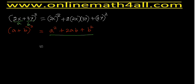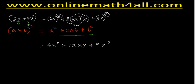Now we apply the square to both 2 and x. When you apply the square to 2, it becomes 4, because 2² = 2 times 2 = 4. When we apply exponent 2 to x, it becomes x². In the second term, we multiply the numbers: 2 times 2 = 4, and 4 times 3 = 12; then x times y = xy. For (3y)², 3² = 9 and y² = y². So the expansion of 2x + 3y whole square equals 4x² + 12xy + 9y².